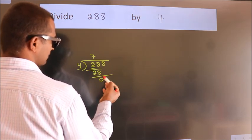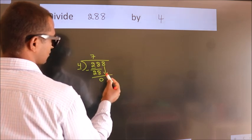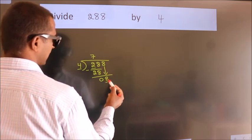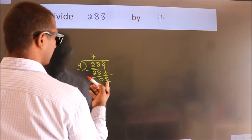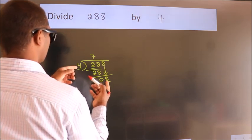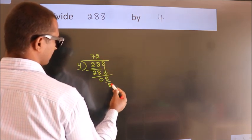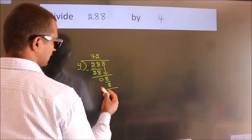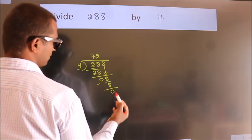After this, bring down the beside number — so bring 8 down, giving us 8. When do we get 8 in the 4 times table? 4 twos are 8. Now we subtract and we get 0.